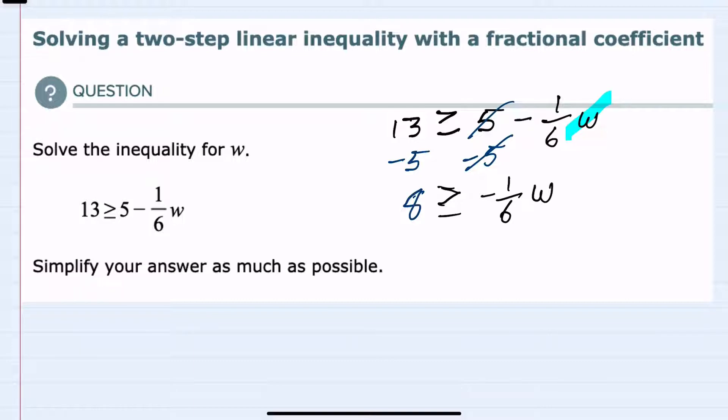In my next step, since I have that fractional coefficient, I can get the w by itself by multiplying by the reciprocal of negative one-sixth, which is negative six over one. I would want to do that on both sides of the equation, and my reason for choosing negative six over one is because the ones cancel, the sixes cancel, even the negative times a negative cancels, leaving me now with just the w on the right-hand side.